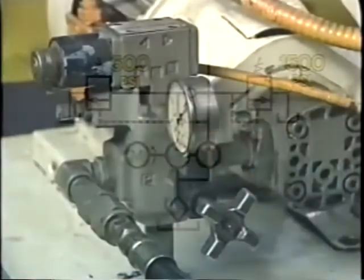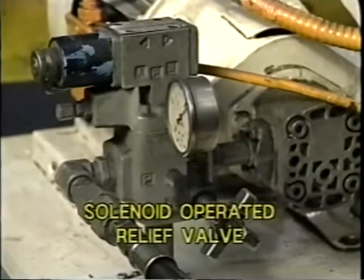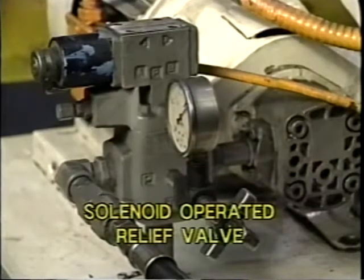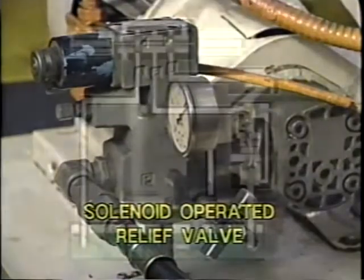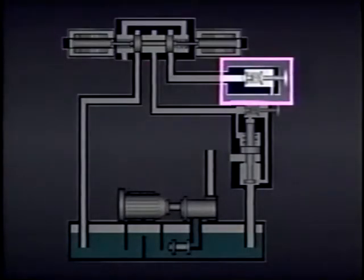Another type of pressure control valve that can be used to operate a system more efficiently is a solenoid operated relief valve. This valve includes a pilot operated relief valve, a solenoid controlled spring offset directional control valve, and a remote pilot valve.